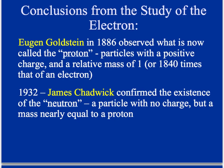Eugen Goldstein in 1886 observed what is now called the proton — a particle with a positive charge and a relative mass of one, or about 2,000 times that of an electron. The next discovery was in 1932 by James Chadwick, who confirmed the existence of the neutron, a particle with no charge but a mass nearly equal to the proton. An important thing to know is that a proton's size is just about equal to the size of a neutron.